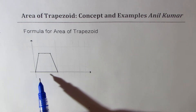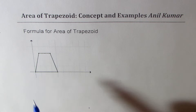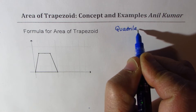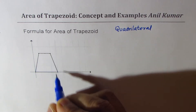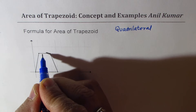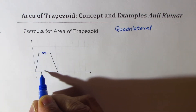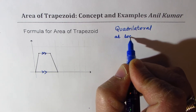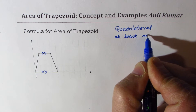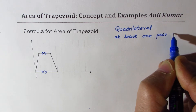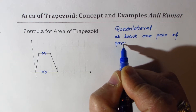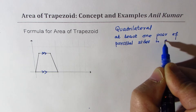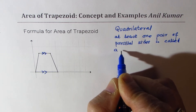So let's begin with the figure shown here. Here we have a four-sided figure — we call this a quadrilateral. Now, this four-sided figure is very special as it has a pair of parallel sides. So any quadrilateral with at least one pair of parallel sides is called a trapezoid.